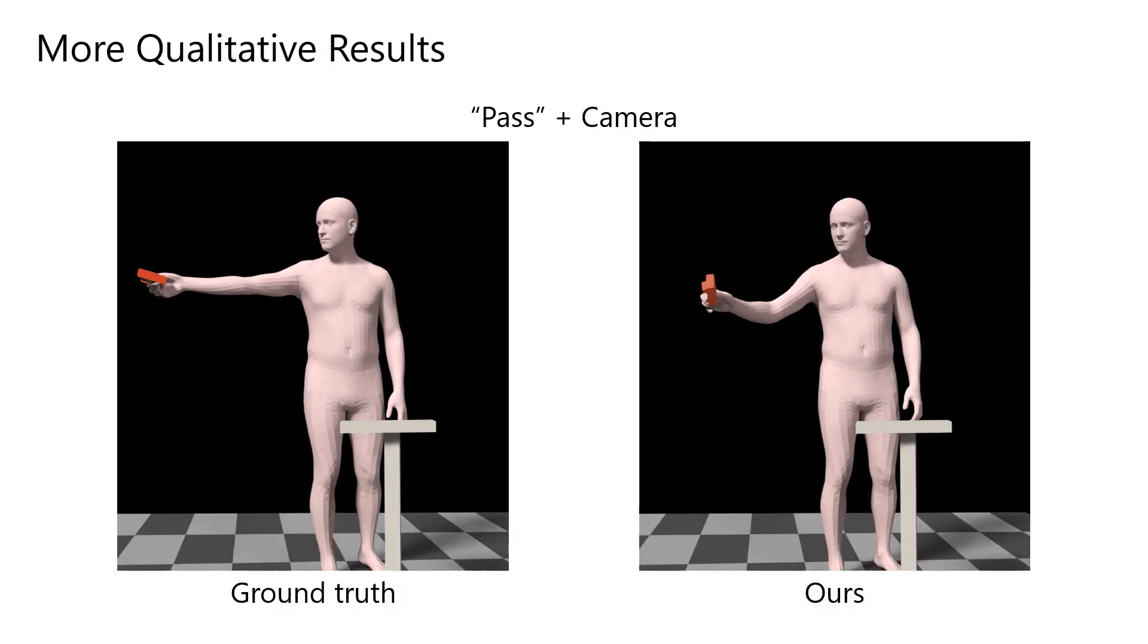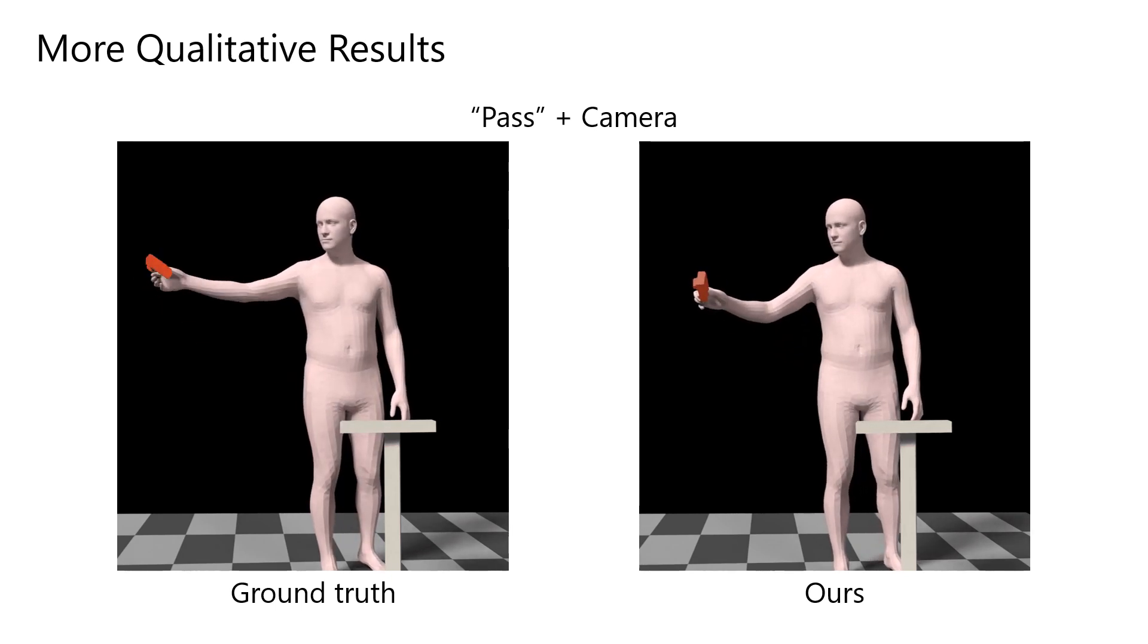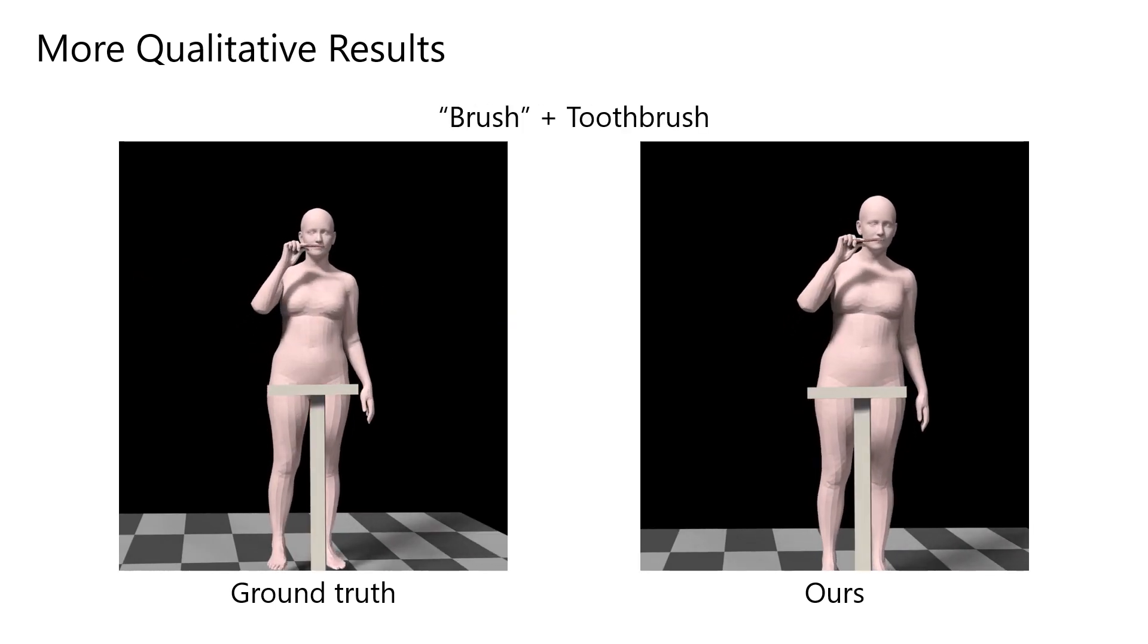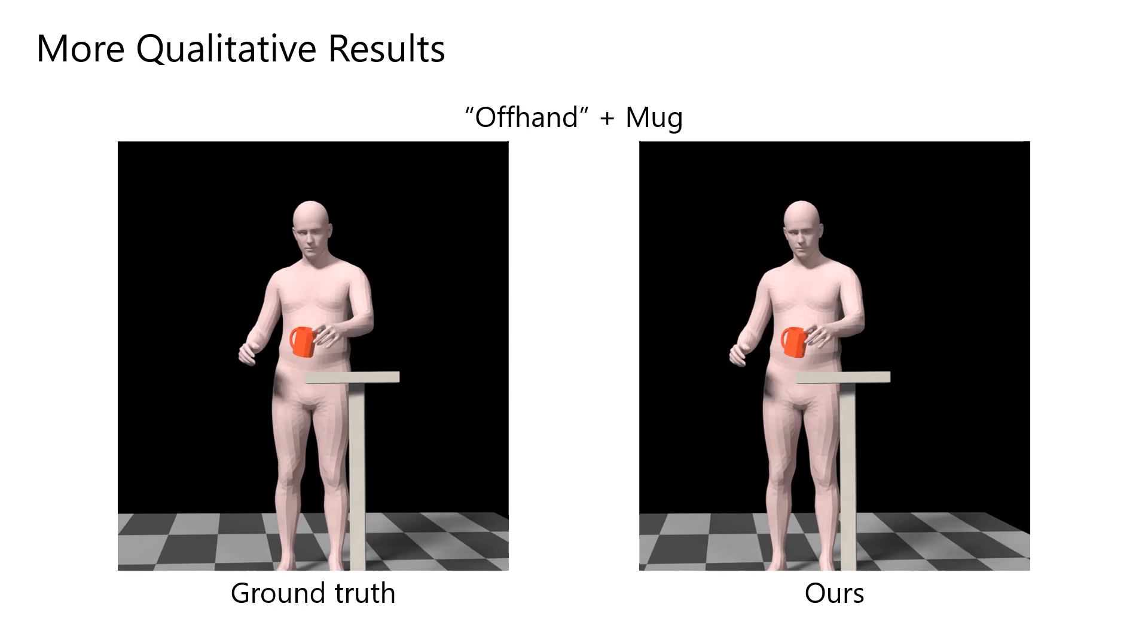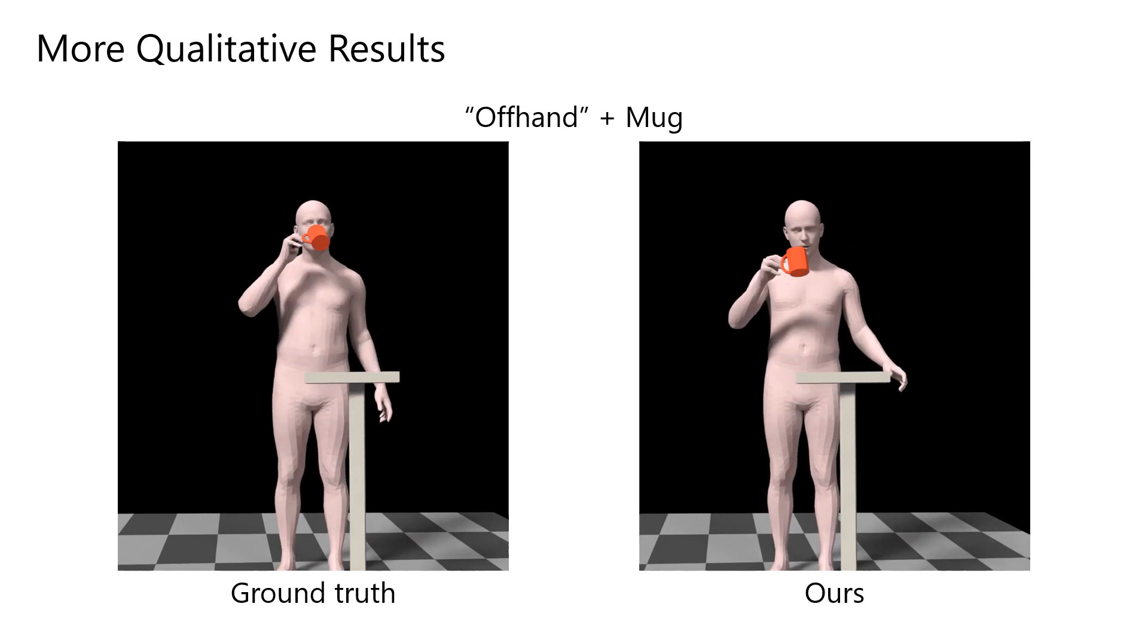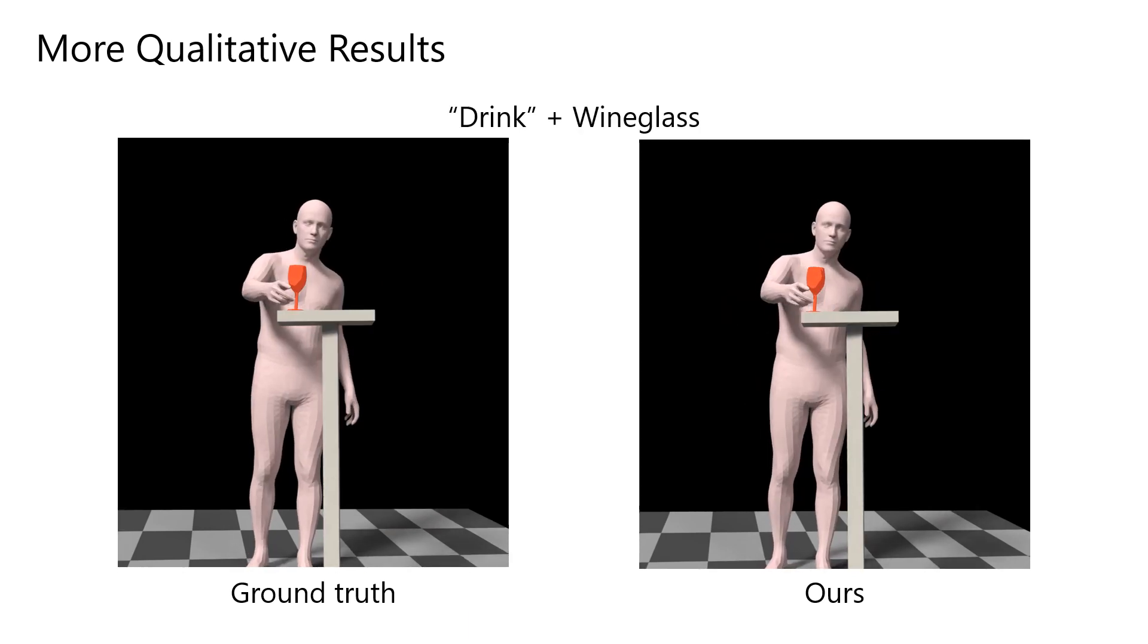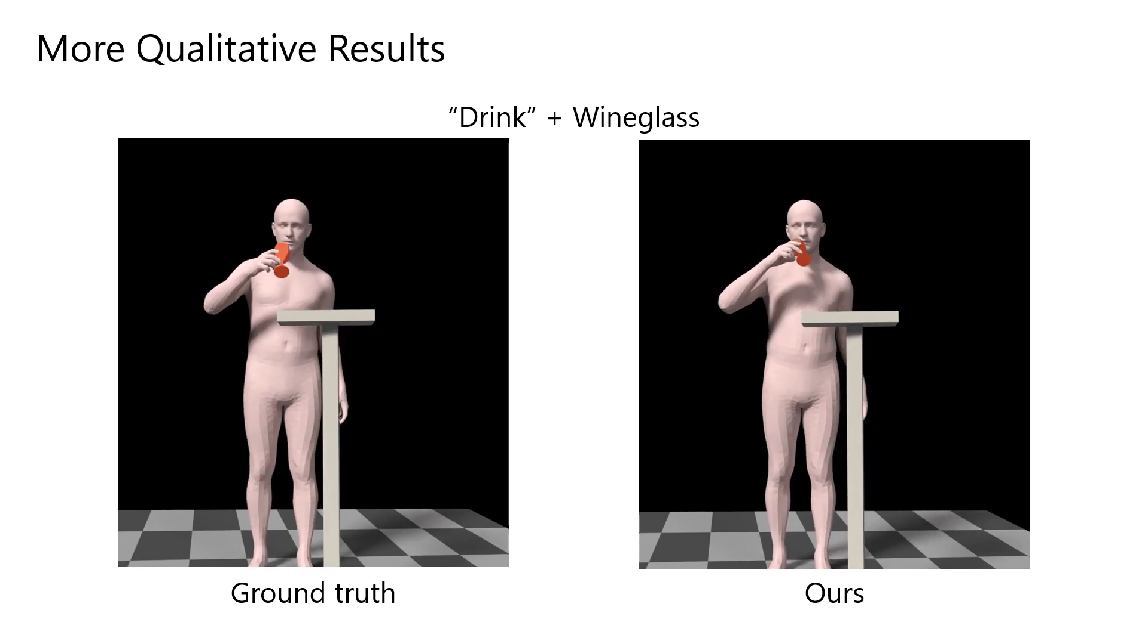We show more qualitative results side by side with the ground-truth sequences. Our method shows accurate arm and head movements for motions such as passing the camera. For brushing action using a toothbrush, our method is able to correctly bring the arms toward the mouth and perform the brushing motion. We see another sequence for the off-handing action where the mug is accurately passed from one hand to another, and another example of drinking action with a wine glass, where our synthesized motions show accurate head tilt and arm motion.